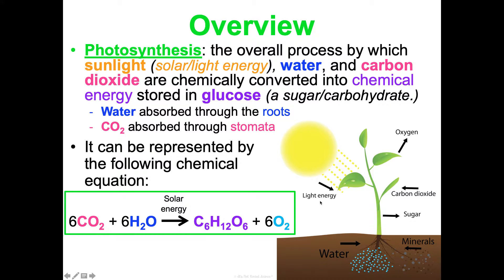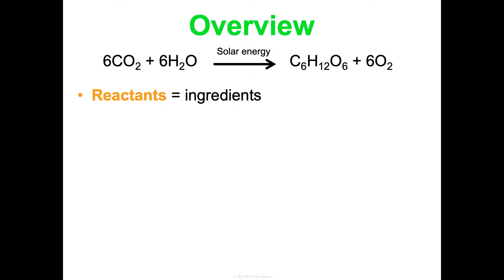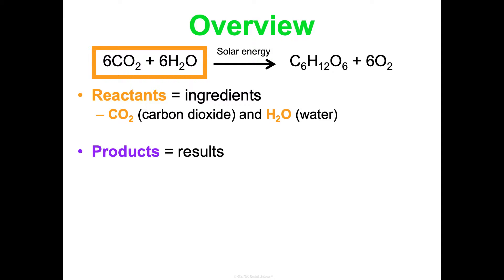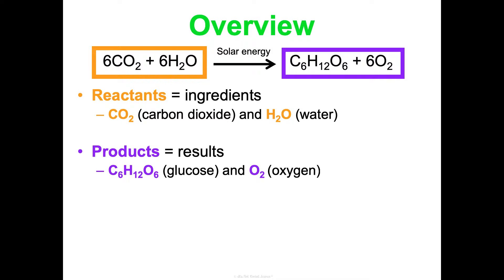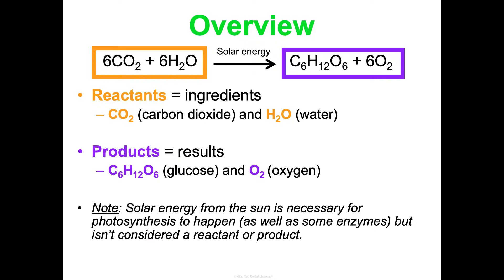You will definitely need to know this equation by heart. A chemical equation is just like a recipe — you have ingredients, which are your reactants (carbon dioxide and water), and you have your products, which are your results (glucose and oxygen). Solar energy from the sun is necessary for photosynthesis to happen, and like all chemical reactions, there are enzymes involved too. But we don't consider solar energy or enzymes an ingredient or result, so if they're written, they're written over the arrow — not on the reactant or product side.